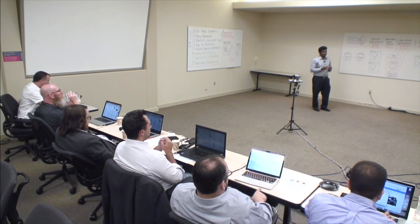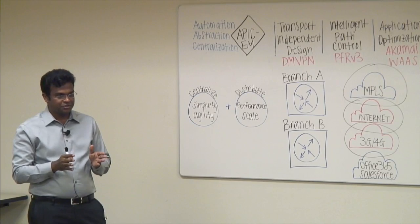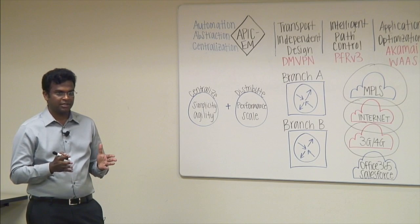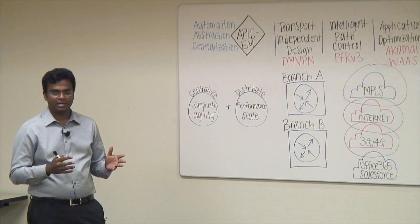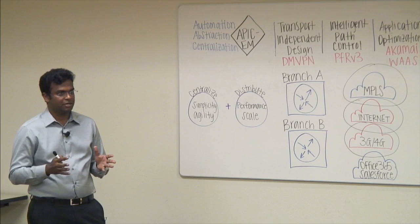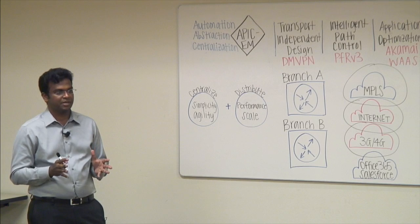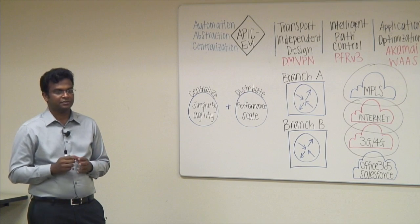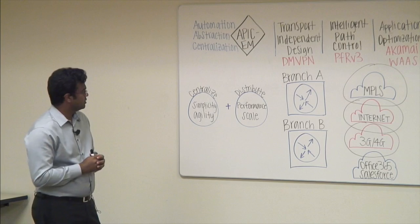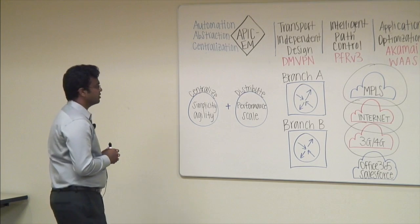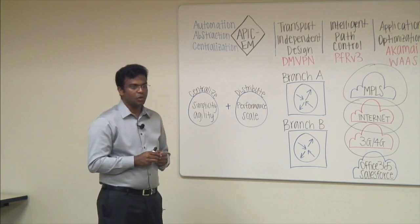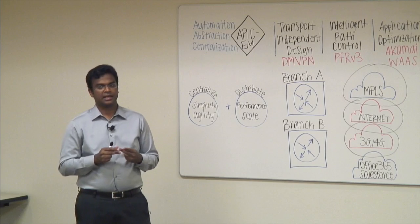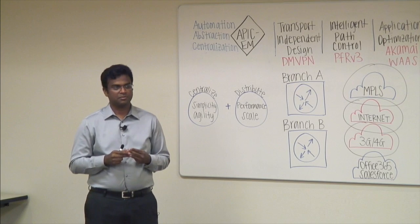The big reason why we choose DMVPN: in Cisco we have multiple overlays, but we chose DMVPN for IWAN deployment. There are three reasons why we did that: security, scale, and flexibility.